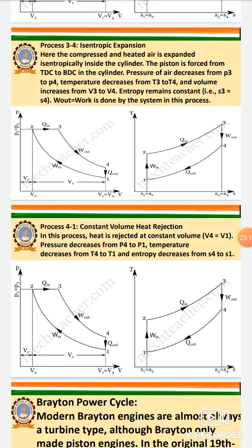The key difference between the Otto and Diesel cycles is: in the petrol engine, there are two isentropic and two constant volume processes. In the diesel engine, there are two isentropic processes, one constant pressure process, and one constant volume process — replacing one of the constant volume processes from the Otto cycle.